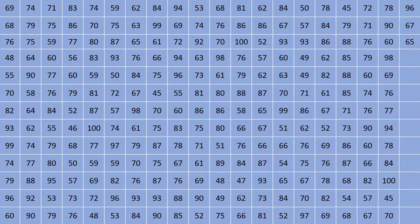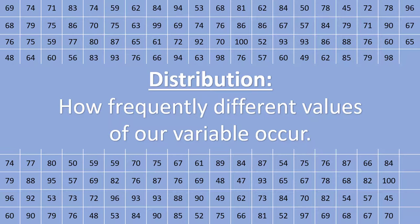Simply looking at the raw data for a quantitative variable can be very overwhelming. It's hard to make any astute observations from just looking at raw data. Here we have the exam scores for 250 students in an introductory statistics class. It's difficult to tell what the distribution of exam scores looks like just by looking at the raw data. By distribution I just mean how frequently different values of our variable occur. There are many ways we could organize this data in order to help us make sense of what the data is telling us. One such way is to create what is called a frequency table or frequency distribution.